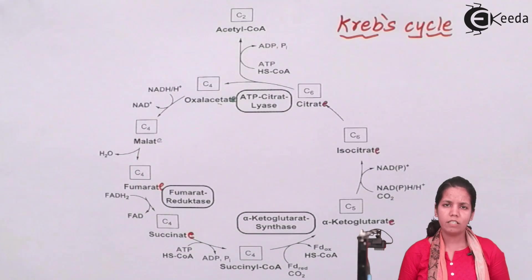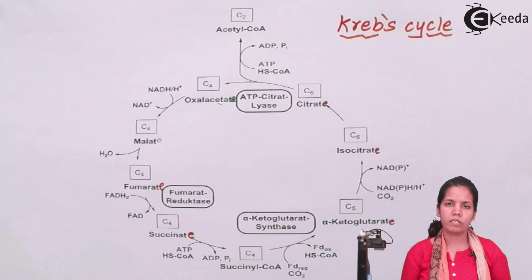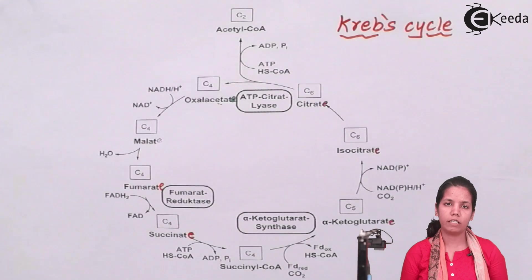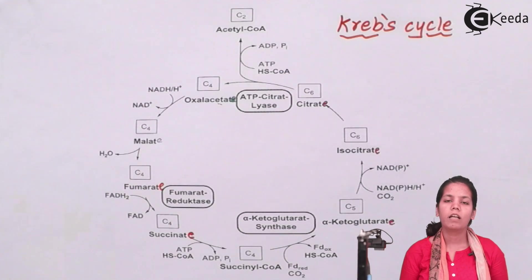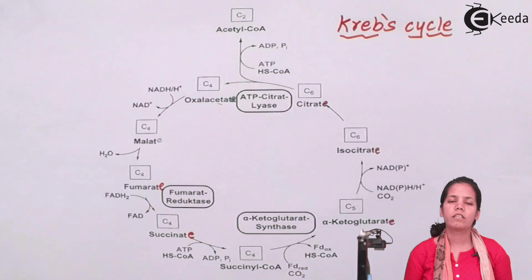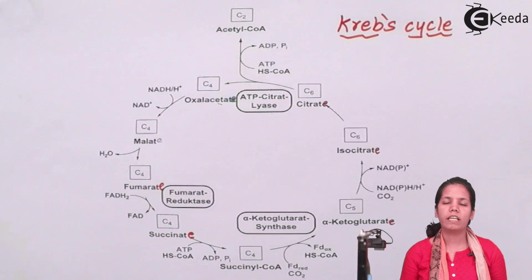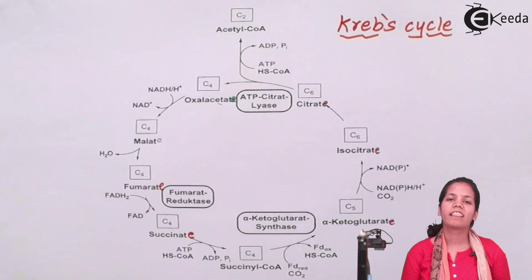So it is true that first glycolysis takes place, and then the Krebs cycle or TCA cycle takes place. I hope you are all clear with the concept of the TCA cycle or Krebs cycle. Thank you.